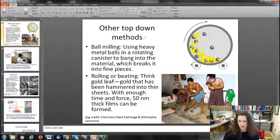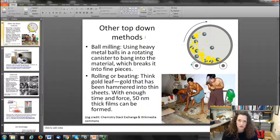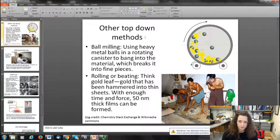You use steel balls in a rotating canister. The balls bang into the material and break whatever you've put in the canister into really fine pieces. You can get nanoparticles on the order of five nanometers or less from this. You can also roll or beat your material.